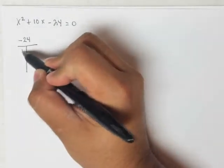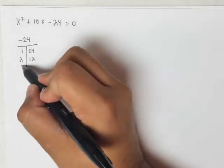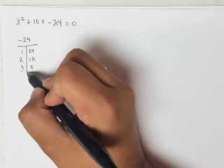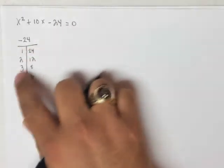So I know 1 times 24. I know 2 times 12. I know 3 times 8. And finally, 4 times 6. All of these have a product of 24.